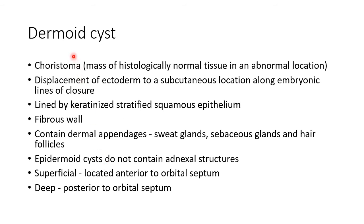Now let us discuss about dermoid cyst. A dermoid cyst is basically a choristoma — that is, it is a mass of histologically normal tissue in an abnormal location. Dermoid cyst develops because of displacement of ectoderm to a subcutaneous location along embryonic lines of closure.